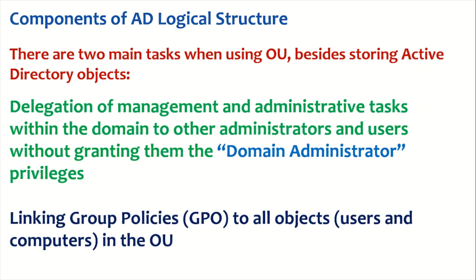The second main task for creating OUs is to link Group Policies. When we link a Group Policy to an OU, the policy gets applied to all components under it — users, computers, and other OUs as well — because policy settings are inherited.